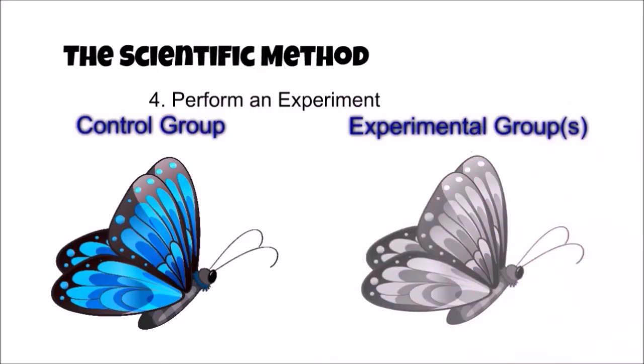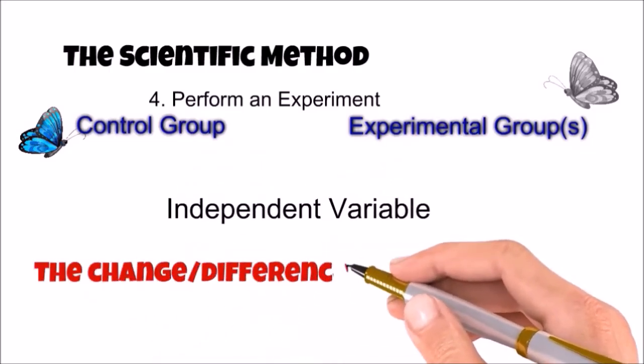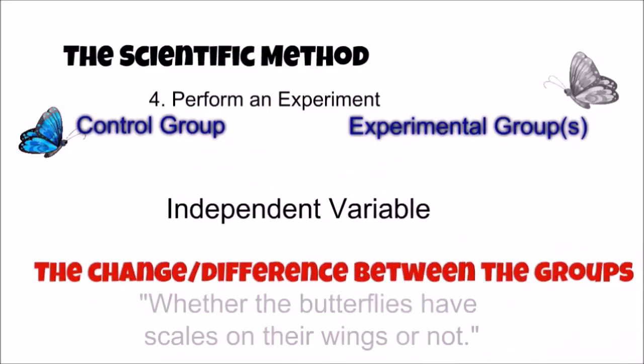The difference between the experimental and control group is known as the independent variable. The independent variable is the change between the groups made by the scientist. For this experiment, the independent variable is whether the butterflies have scales on their wings or not. To be identified correctly, the independent variable must always be stated as the difference between the experimental and control groups.